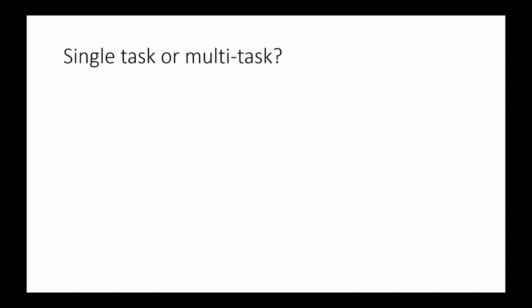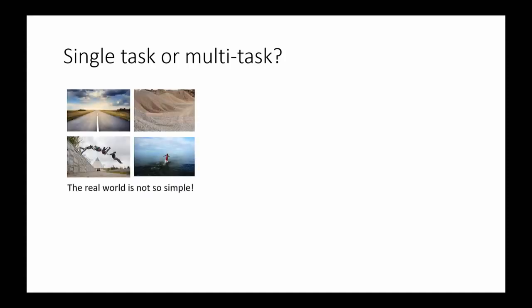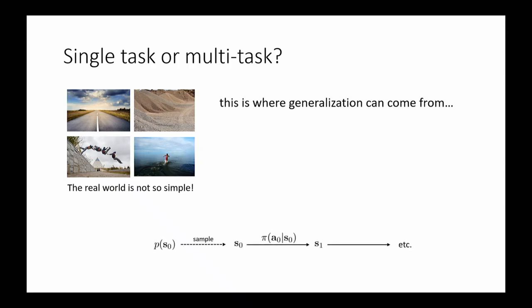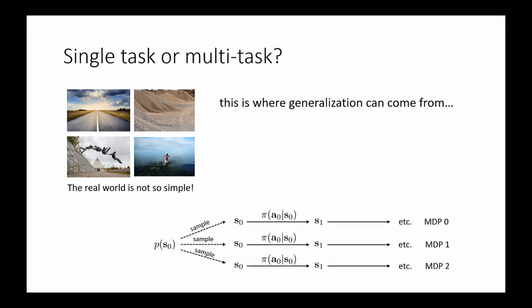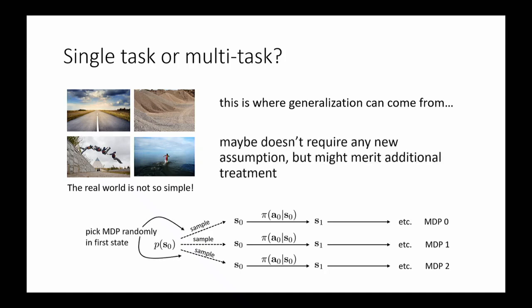Generalization is deeply tied to multitask learning. If you want to generalize across different environments for running, you're effectively solving multiple tasks. You can embed a multitask learning problem into a standard MDP by having the first timestep randomly pick a different initial state representing a different task. That's totally reasonable as a formulation, but it doesn't make it easy to solve. It might merit additional machinery that makes these problems more efficient, since they come up all the time if you want generalization.